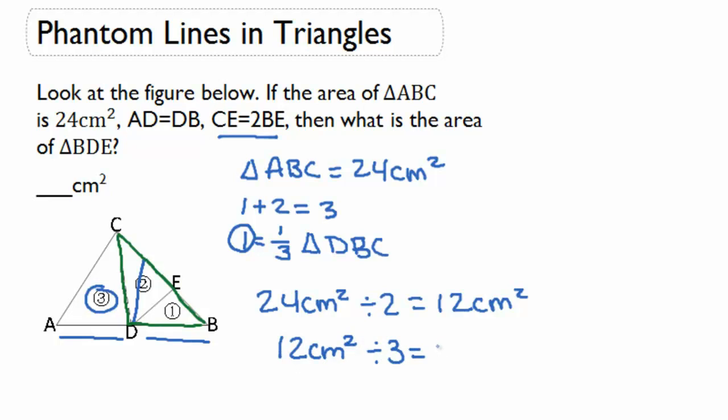And we'll find that triangle 1 is 4 centimeters squared. So our triangle DBE is 4 centimeters squared.